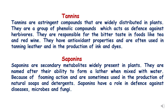Tannins are astringent compounds that are widely distributed in plants. They belong to phenolic groups and act as a defense against herbivores. They are responsible for the bitter taste in food like tea and red wine. Tannins also have antioxidant properties and are often used in tanning leather and in the production of ink and dyes.